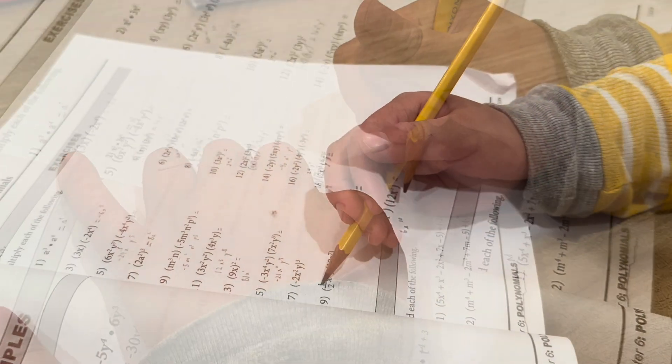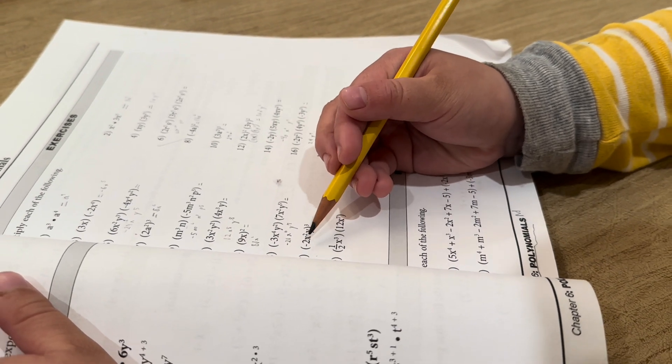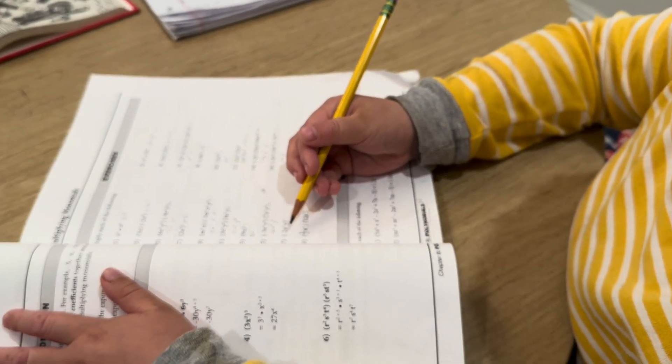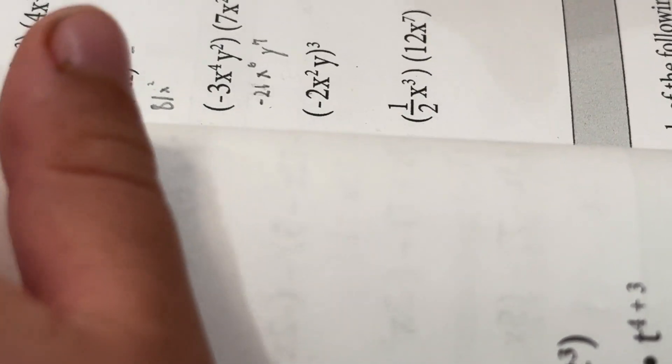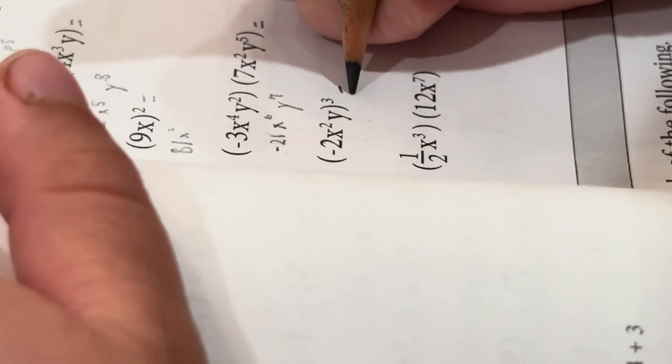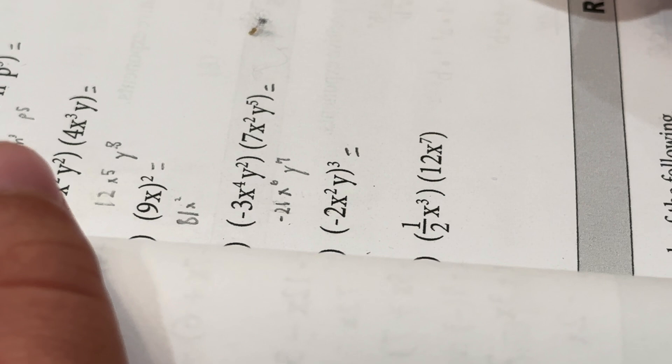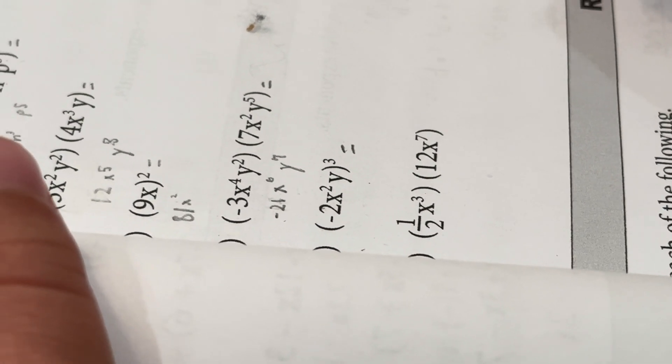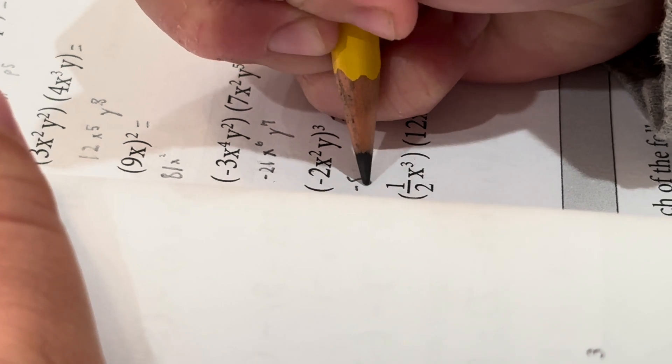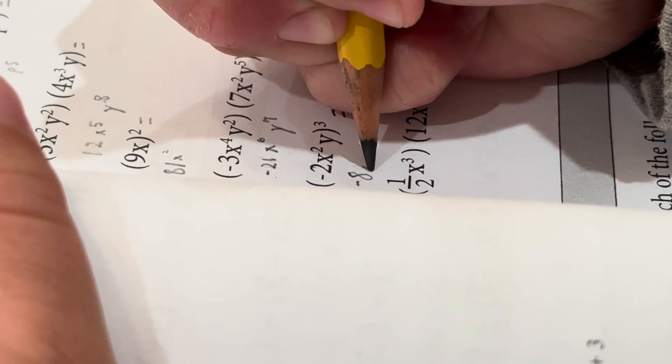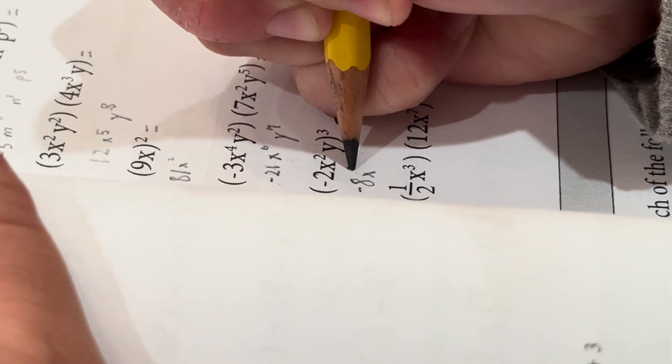Problem 17: negative 2 x squared y cubed. Problem 18 equals negative 8 x to the sixth. Oh, that was 2, not 6.